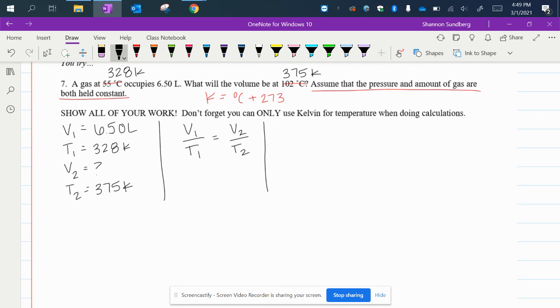V1 is 6.50 liters over T1, which is 328 Kelvin. That's equal to V2 over T2, which is 375 Kelvin.